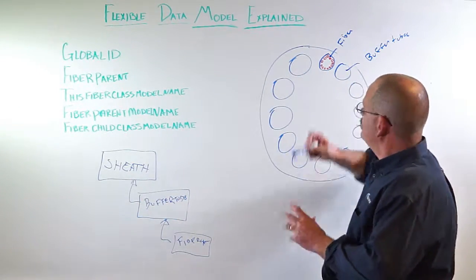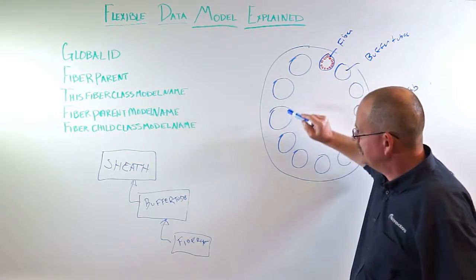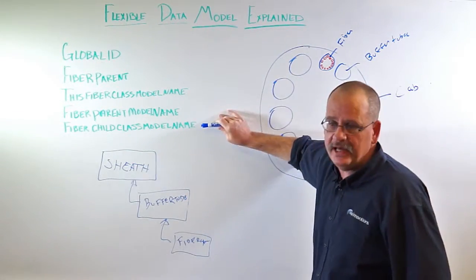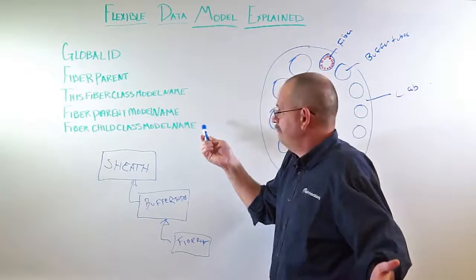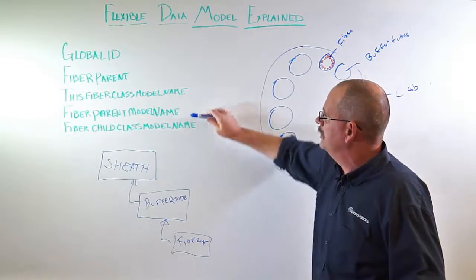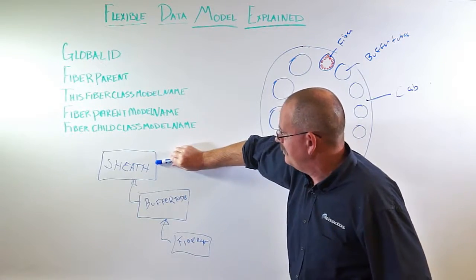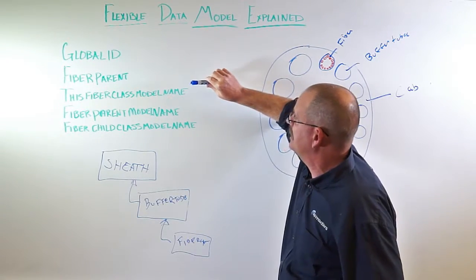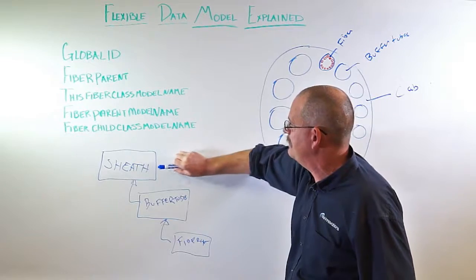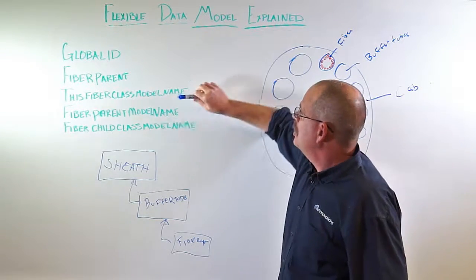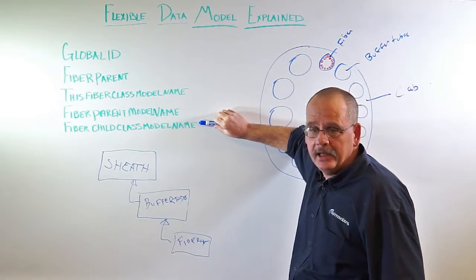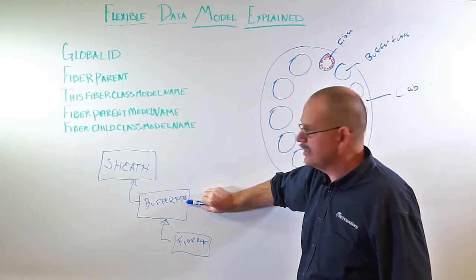So when we're setting this up, you set these values up to work, and it's pretty straightforward. When we're setting up the sheath, we just have to set up this fiber class model name equals sheath, the fiber child class model name is going to be set to buffer tube.